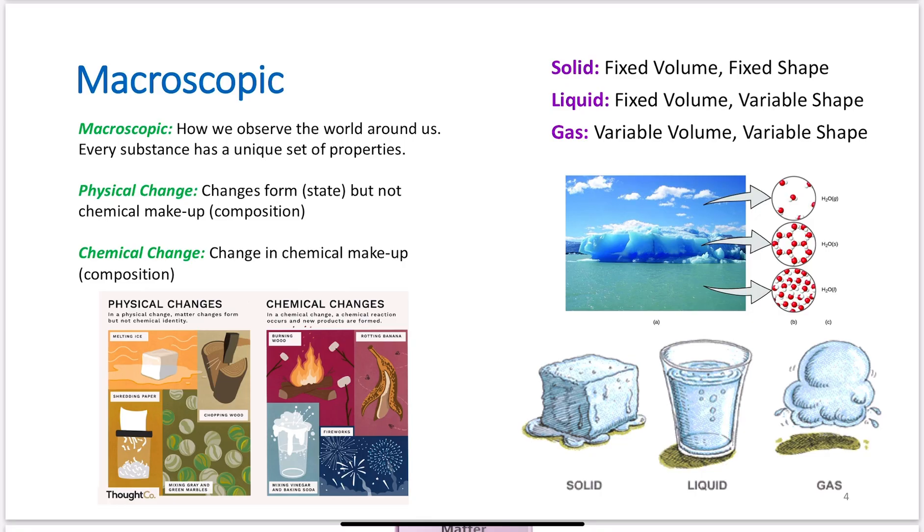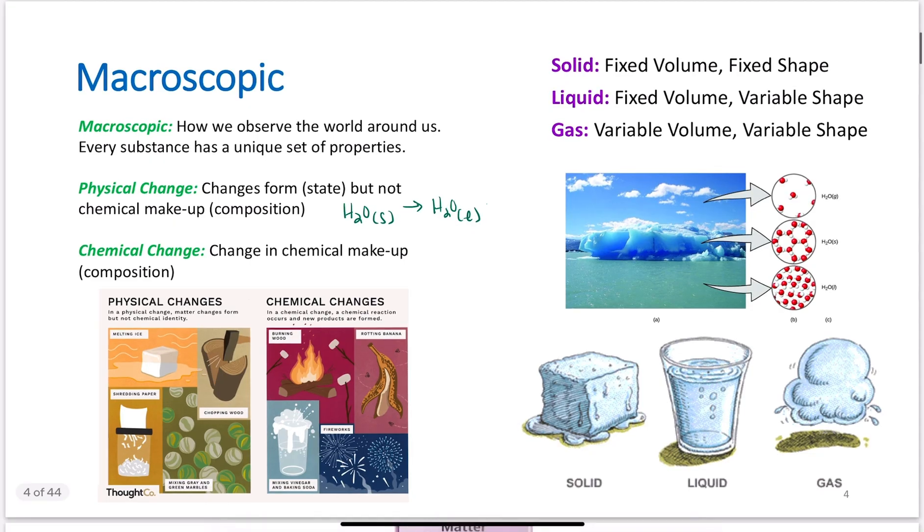When we're talking about the world of science, we can have different types of changes occur. We can have physical changes and chemical changes. A physical change is something that changes the form or the state of the matter, but not the chemical makeup. It doesn't change the actual composition. What I mean by that is like water in the solid phase, known as ice, being converted to water in the liquid phase, which we call water, being converted to water in the gas phase, which we often call a vapor or a gas.